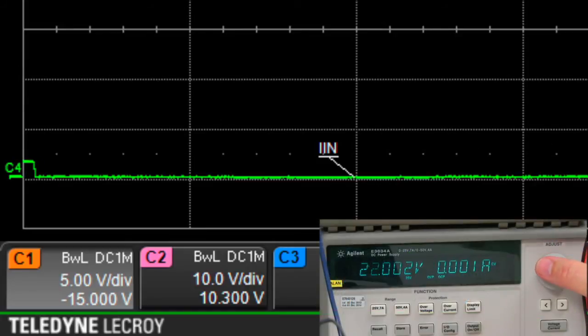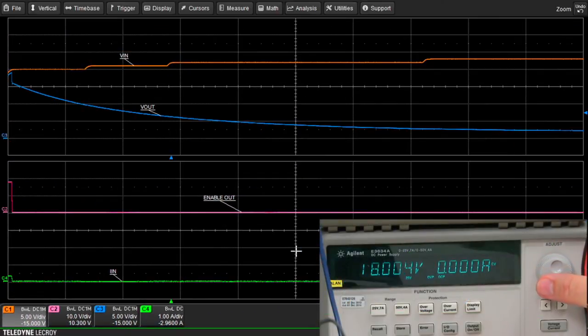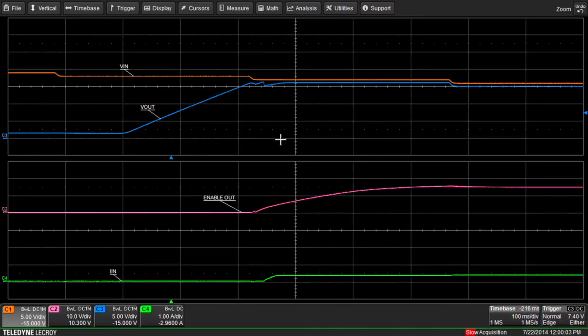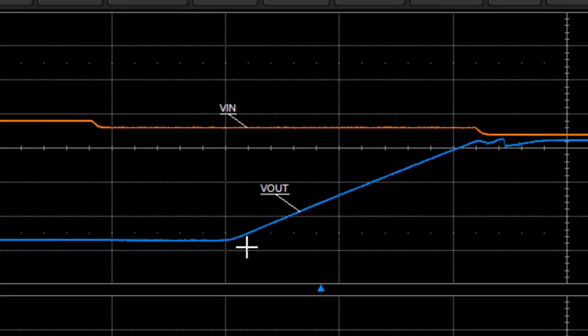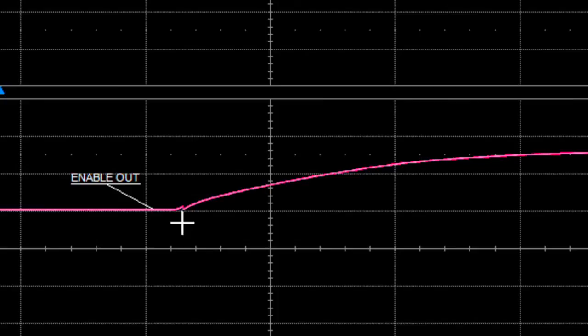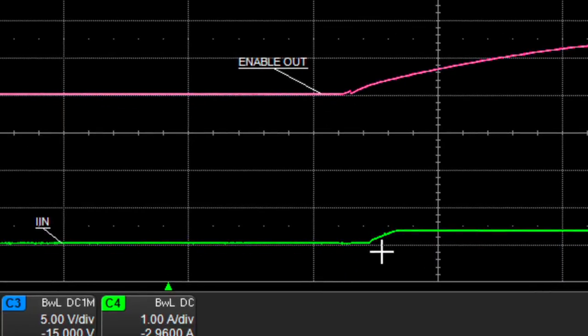If we decrease the power supply voltage back toward 12, the system will again re-enable, and we again get a soft start event. The output voltage slowly increased in a controlled manner as the MOSFET turned on. The input voltage was decreasing during this event, and again, we have this enable, which delays the turn-on of the switching mode power supply. We can see that right here in the green trace as input current rises from zero.